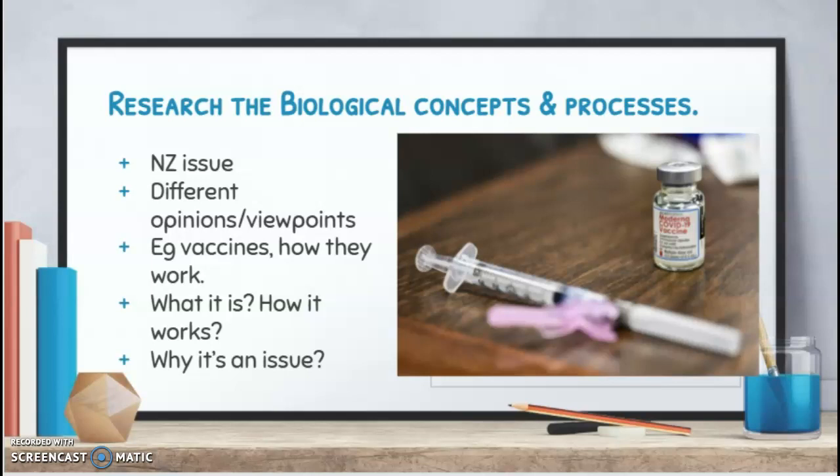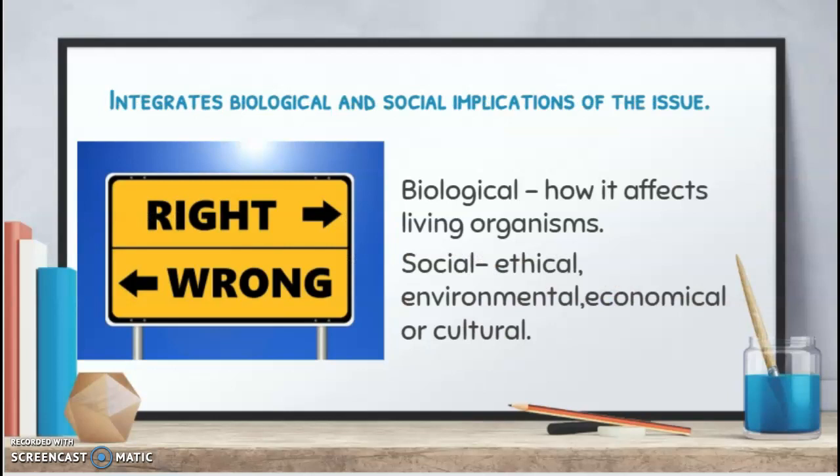You may find there is some overlap here with the biological implications. You need to integrate biological and social implications of the issue, so you will need a number of sources. The biological implications could be something good or a bad impact. For example, if you're doing fluoridation of water, we know there is a positive impact that fluoride has on strengthening teeth. Try to think of a few, as this will support your justification of your opinion and recommendations for excellence. The social implications can come from ethics, environmental, economical, or culture.